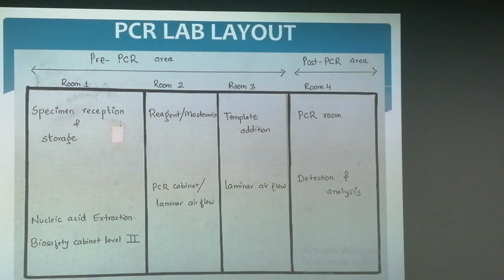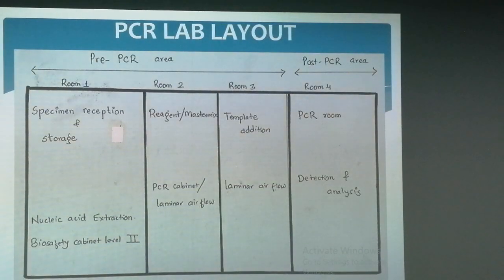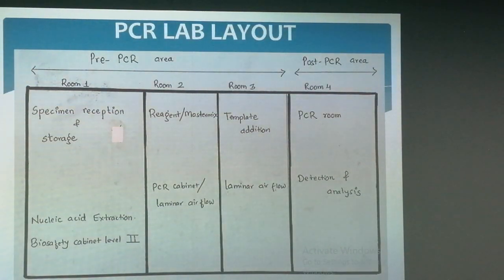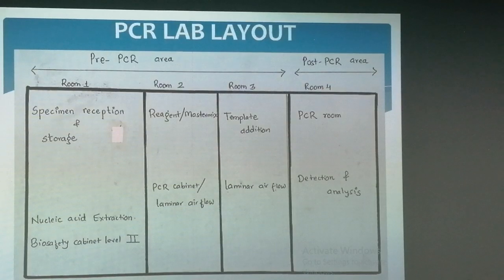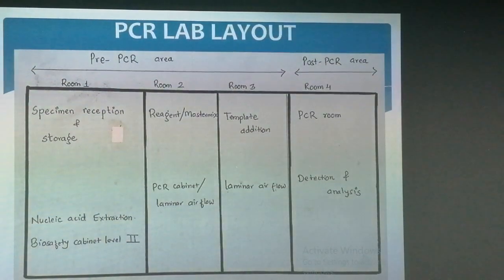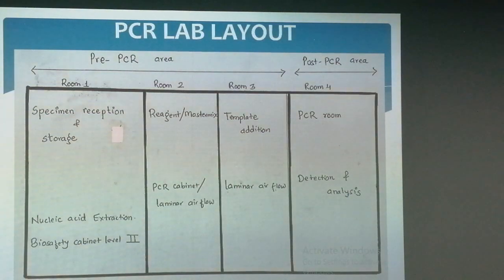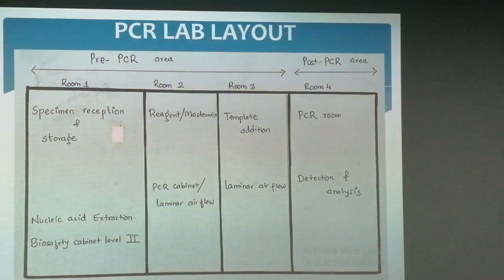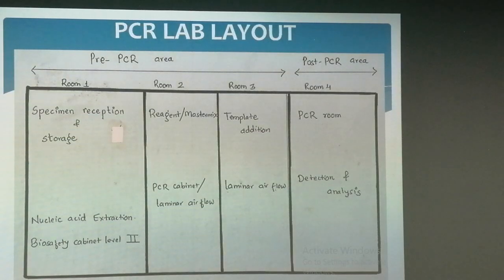Room one is for specimen storage and nucleic acid extraction, for which a biosafety cabinet is kept there. Room two is for reagent and master mix preparation, which is done inside a PCR cabinet, and room three is for template addition, where extracted nucleic acid is added to master mix. Finally, room four is where the PCR machine or thermocycler is placed for amplification of DNA and further processing. At the bottom you can see there is written 'unidirectional workflow,' meaning the work process should flow from room one to room four and backtracking will not be good for the process.